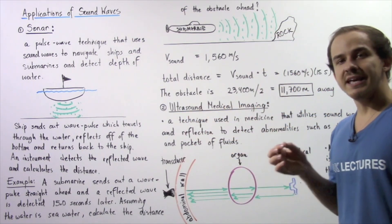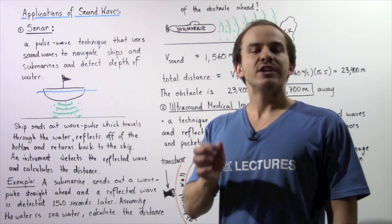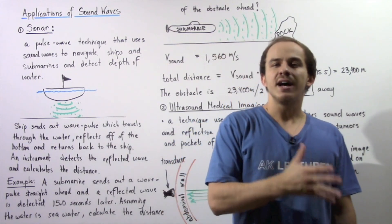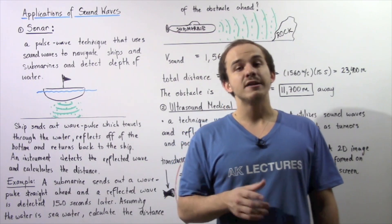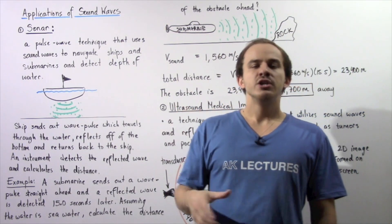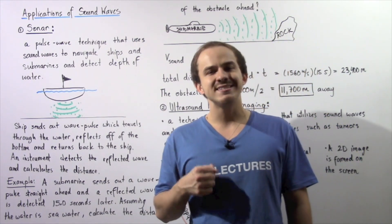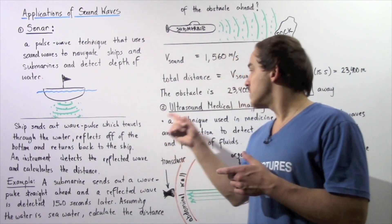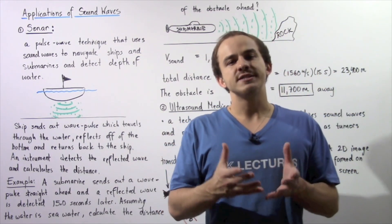Ultrasound medical imaging is a technique used in medicine that utilizes sound waves and reflection to help us study and detect various types of abnormalities found in the human body. For example, we can use ultrasound medical imaging to detect tumors and pockets of fluid found inside our body.